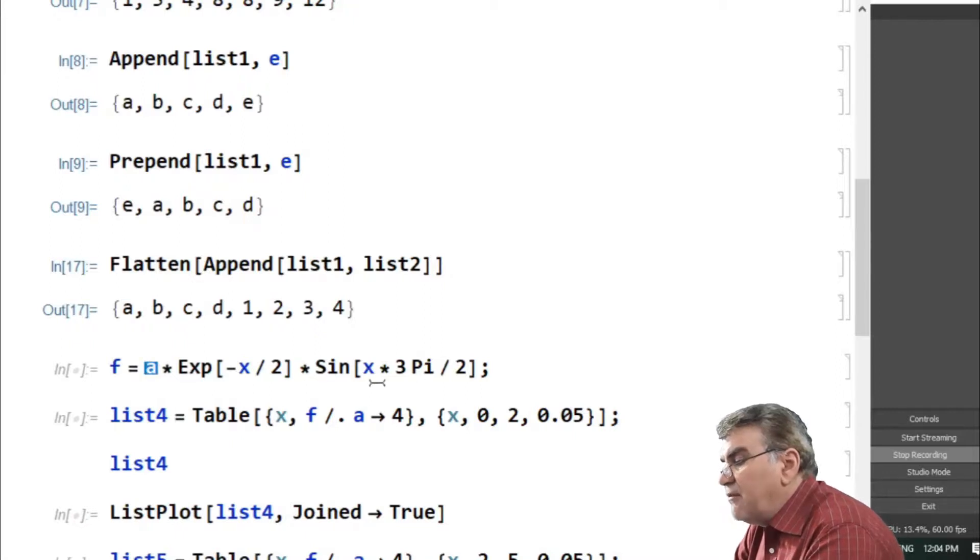I want to plot this function for a equal 4 against x varying from 0 to 2, so I can do that by first making a table of the list for each value of x, where I'm using x as iterator with increment 0.05.